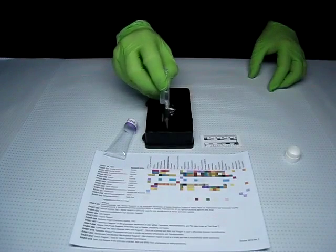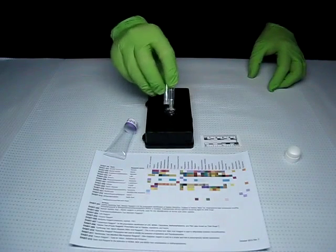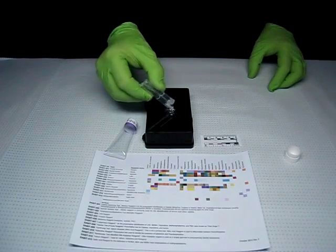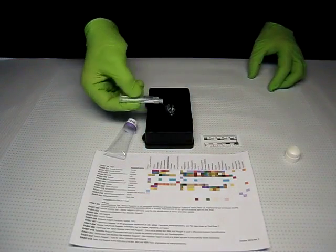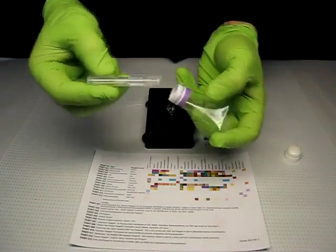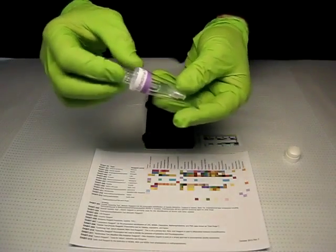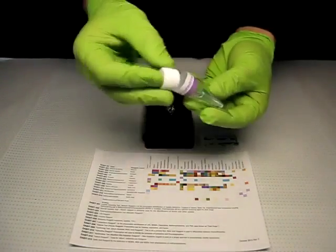Return the sampler to the clear inner tube, sample tip first, and replace the cap. Squeeze to break both ampules inside, expelling all of the liquid into the bottom of the tube.